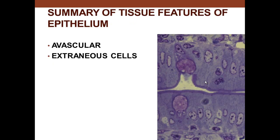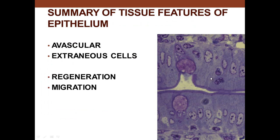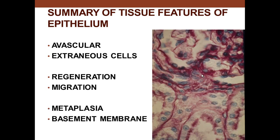Several features of epithelium: it is avascular — it doesn't have blood vessels; blood vessels in the connective tissue below support it. You can have extraneous cells like lymphocytes that migrate through. Epithelium has an amazing ability to regenerate — if you have a burn and still have sweat glands there, the cells of the sweat gland can repopulate the surface. Since it regenerates so easily, 90% of cancers are from epithelium and those cells can migrate.